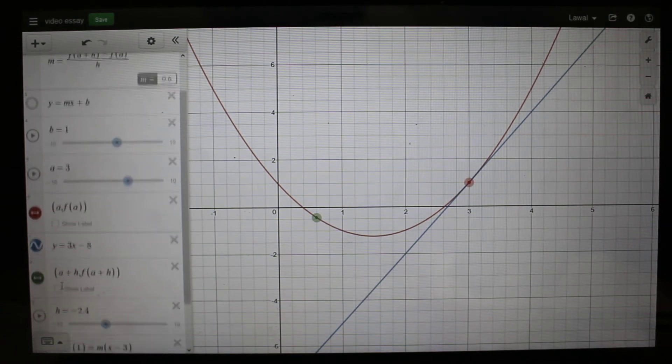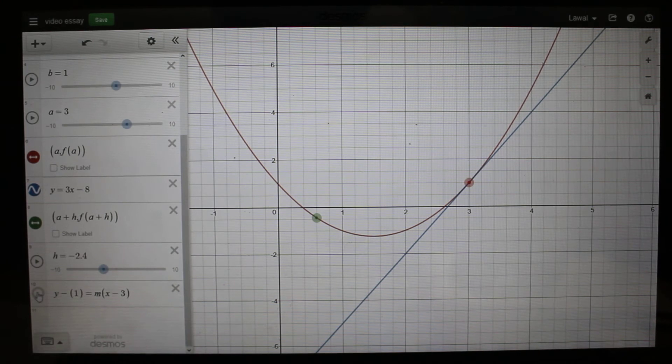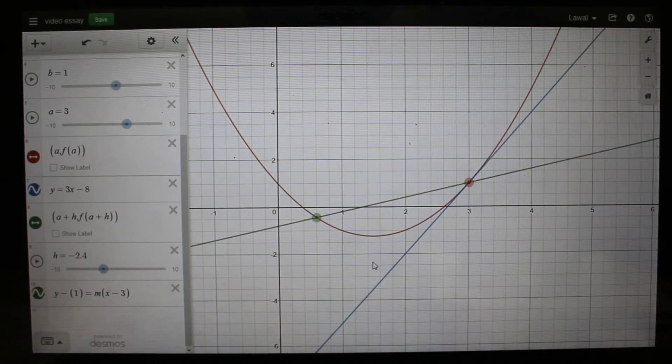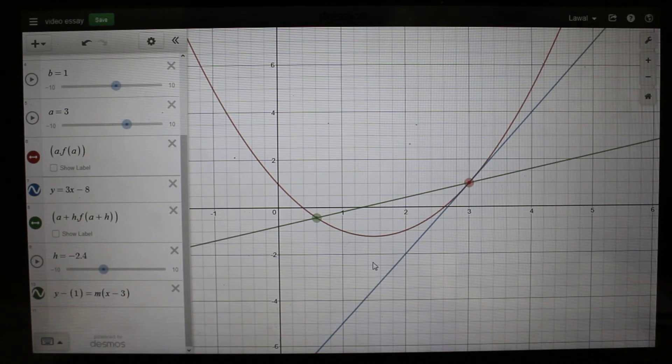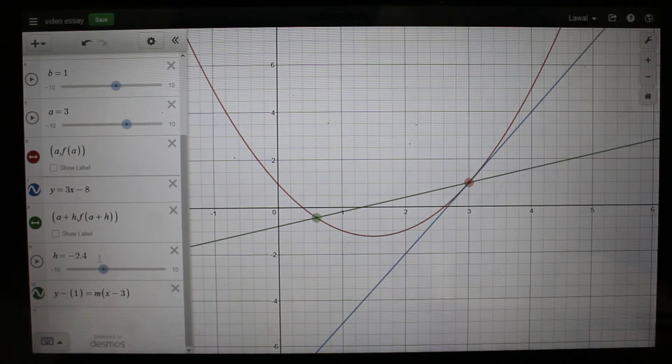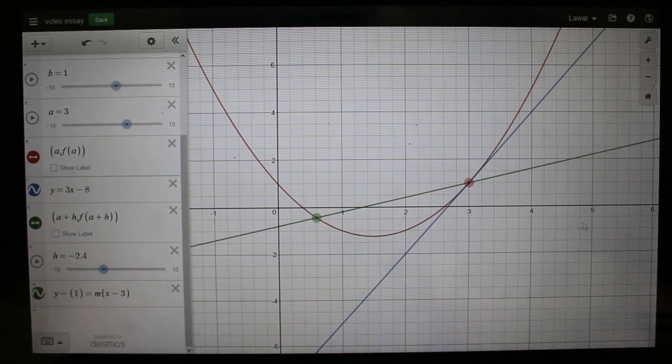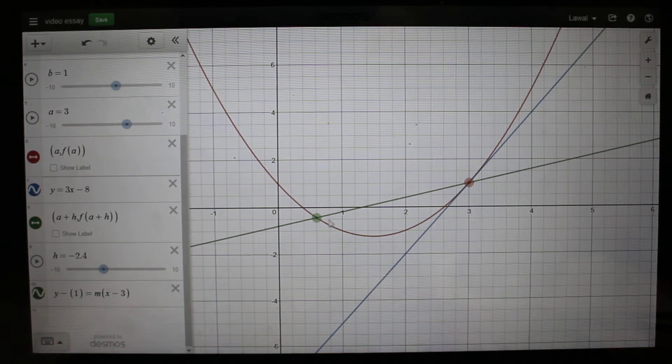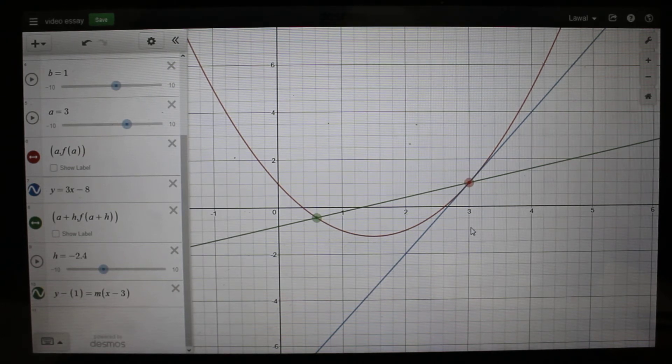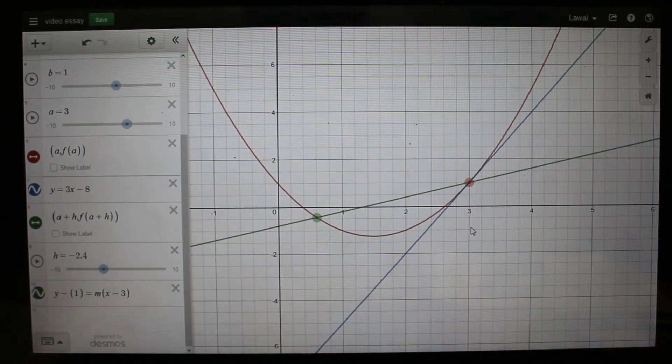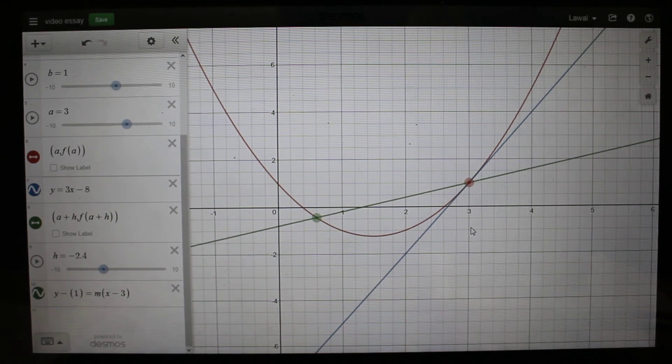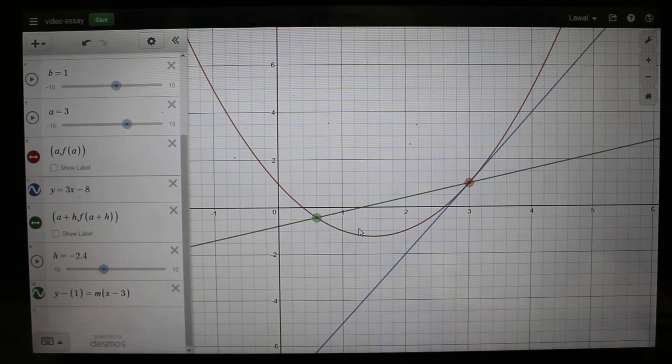We also learned that as the h becomes smaller, the h also tends to move towards the slope, creating or minimizing the slope. As it gets closer to zero, hereby creating no slope.